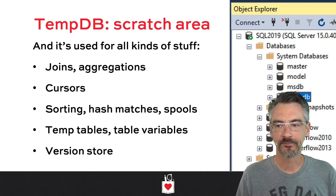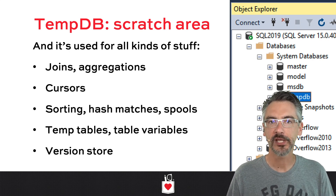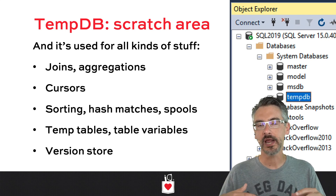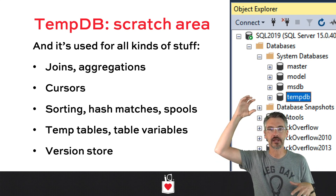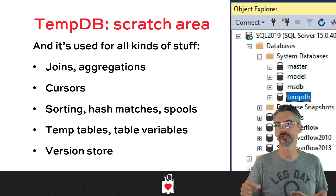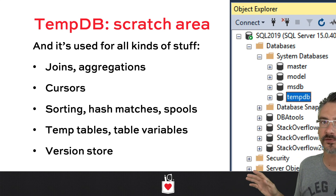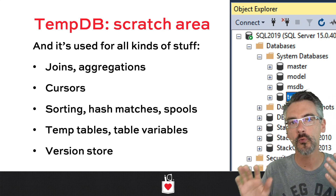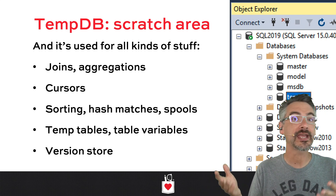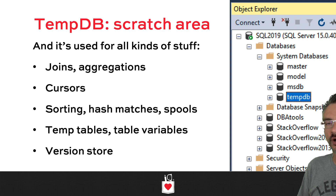TempDB is kind of like a scratch area. If you're a systems administrator, you can think of it as a swap space for SQL Server. It's a place where it goes and scribbles things down that it needs to keep track of. For example, when queries are allocated workspace memory in order to run, they may not have enough memory granted to them, so they need a scribbling space to sort their data and keep track of data for parallelism. That place for SQL Server isn't the swap file - it doesn't go out to the operating system swap file. It would rather go into this system database called TempDB.